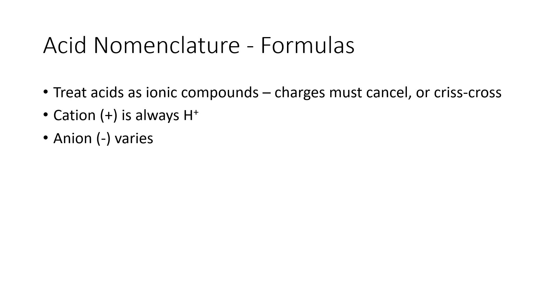When we write the formulas for acids, we're going to treat them as ionic compounds, and you need for the charge on the cation, the positive ion, to cancel the charge on the anion, the negative ion. If the charges don't cancel, you've got to crisscross to figure out what subscripts to use. Now there is a restriction here in that the cation will always be H+. That's what makes it an acid. The anion will vary. But just keep in mind that the charges do have to cancel out, or if they don't cancel, you'll have to crisscross.